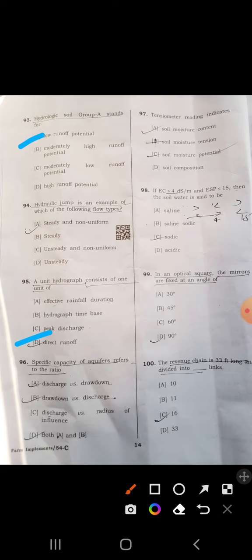Ninety-fifth: unit hydrograph consists of one unit of direct runoff. D is correct. Ninety-sixth: specific capacity of aquifer refers to ratio of discharge to drawdown. Most popular answer is A.